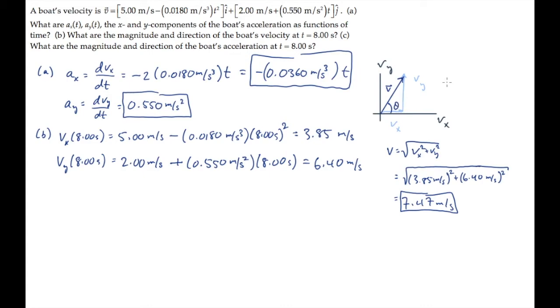The direction of that velocity vector is the direction the boat is heading. That's given by the angle theta, which is the inverse tangent of the y component over the x component. Substitute the known values and calculate to find that theta equals 59.0 degrees.